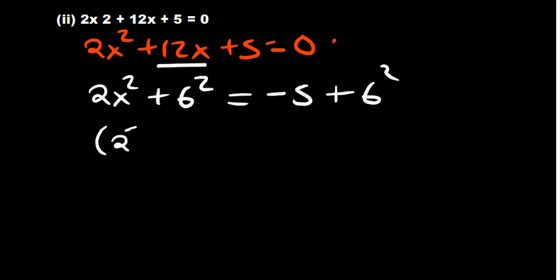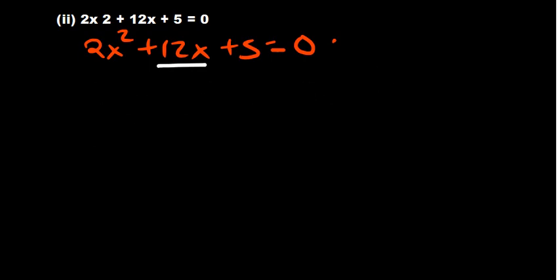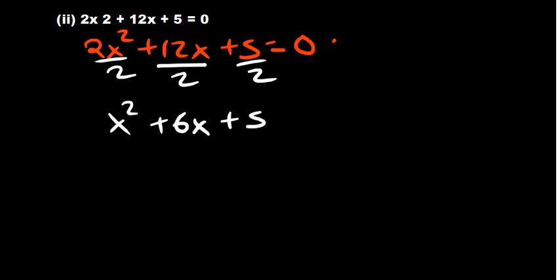So we divide throughout by 2, giving us x squared plus 6x plus 5 over 2 equals 0. Now that the coefficient of x squared is 1, we can proceed: only find the half of the b part once the coefficient of x squared is 1.